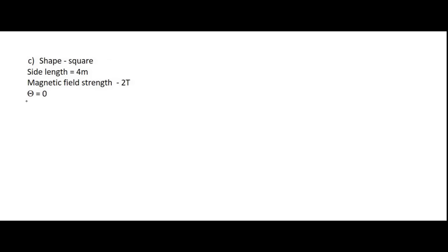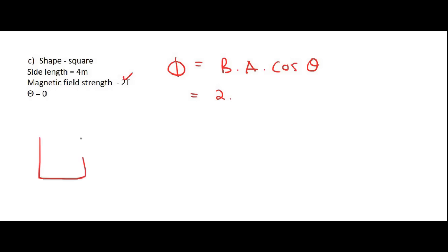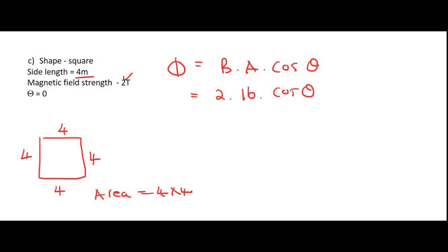Moving on — now they're giving us a square with side length 4 and magnetic field strength 2, theta is 0. We use Φ = B·A·cosθ. The area of the square is 4 × 4 = 16. So Φ = 2 × 16 × cos0, which gives us 32 Weber.